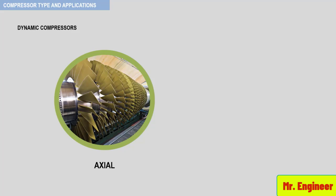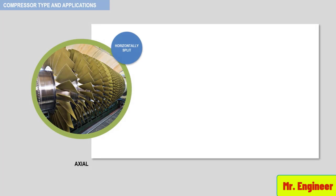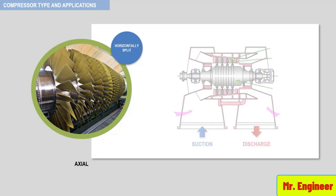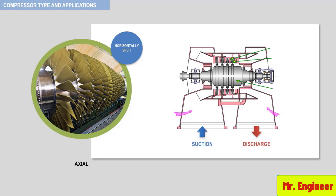Pressure ratios per casing are comparable to centrifugal compressors, but the flow rates are considerably higher for a given casing diameter because of the greater area of the flow path. A typical example of a horizontally split axial compressor is shown here with the suction and discharge nozzles, and here you can see its corresponding cut section.